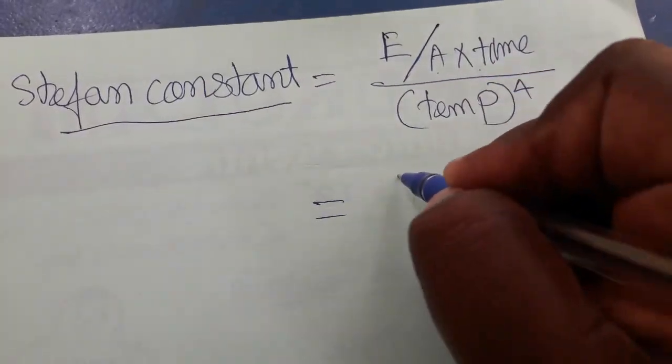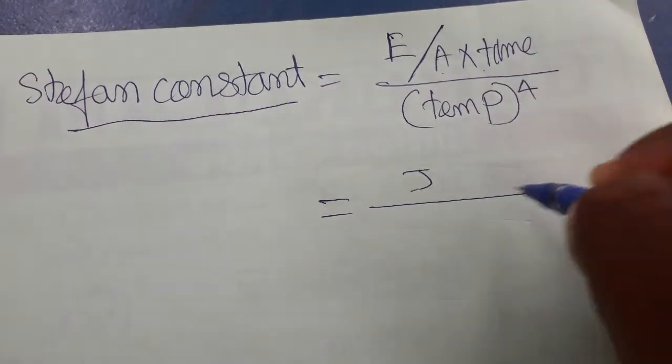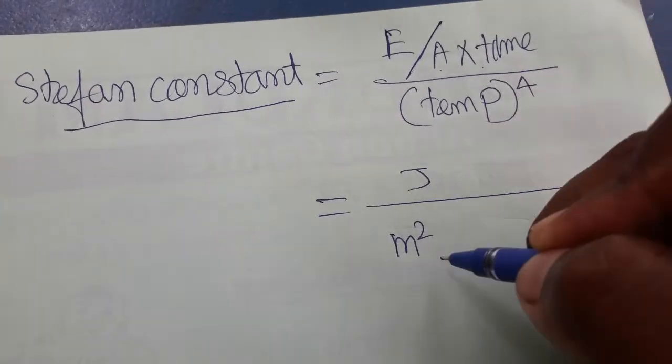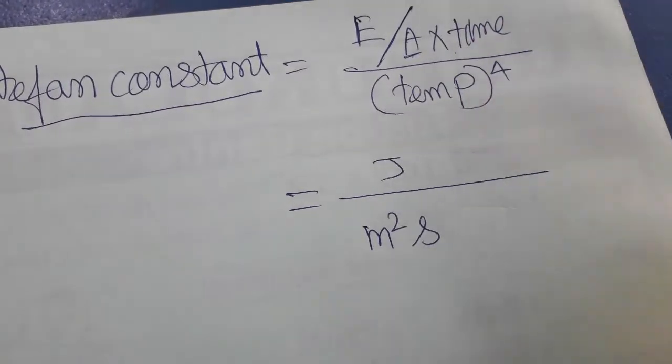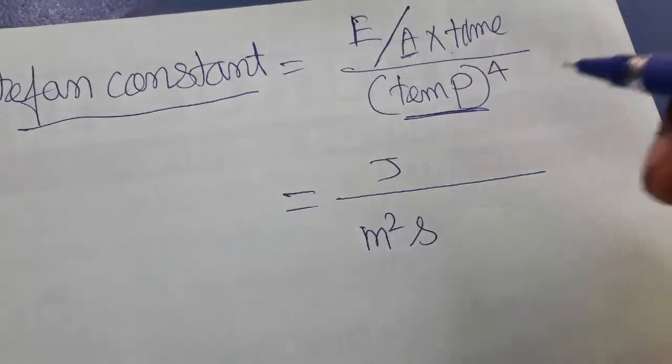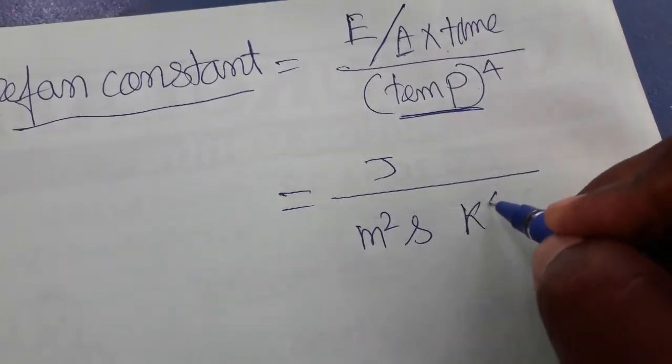Energy is joules, area is meter square, time is second and temperature. Area is length to breadth, meter meter, meter square. Temperature is a Kelvin, so Kelvin power 4, K power 4.